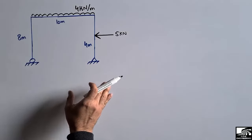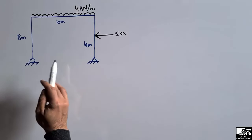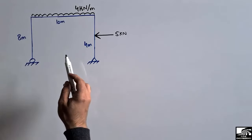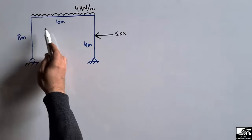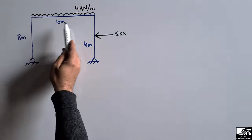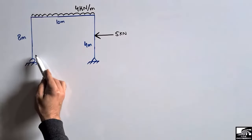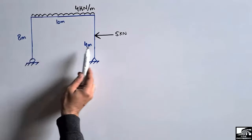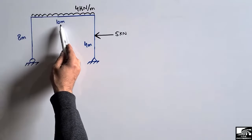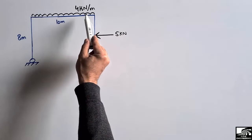We will draw the shear force and bending moment diagram for this frame. This frame is supported by two supports: one is a roller support and the other is a hinge support. The frame has one beam supported by two vertical columns. The column length is 8 meters — both columns have the same length — and the beam length is 10 meters. The beam is loaded with a 4 kN per meter uniformly distributed load.